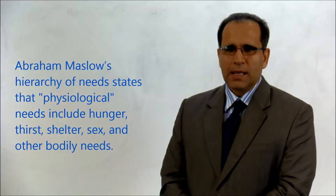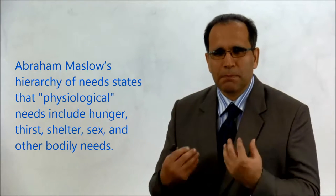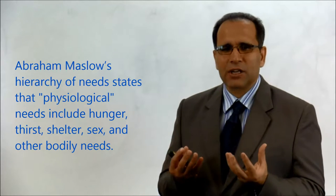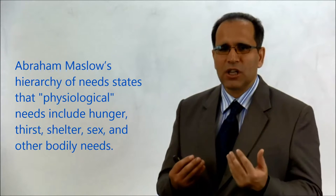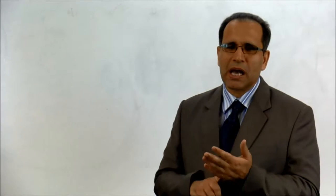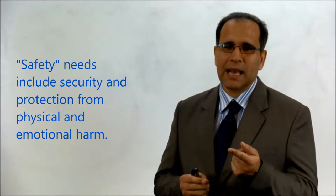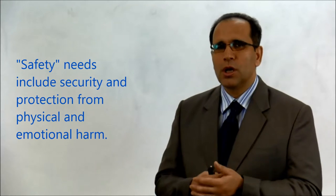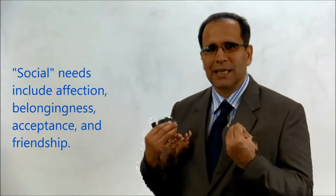One of them would be Maslow's. Abraham Maslow hypothesized that within every human being there exists a hierarchy of five needs beginning with the physiological needs that include hunger, thirst, shelter, sex, and other bodily needs. The second level is safety needs that include security as well as protection from physical and emotional harm. The third level is social needs that include affection, belonging, acceptance, and friendship.